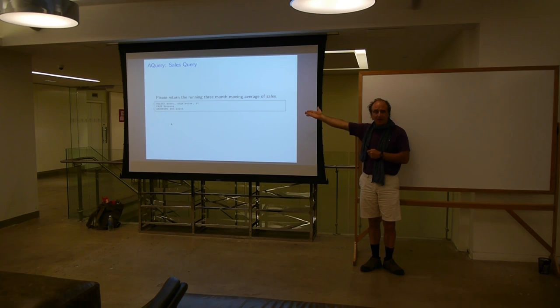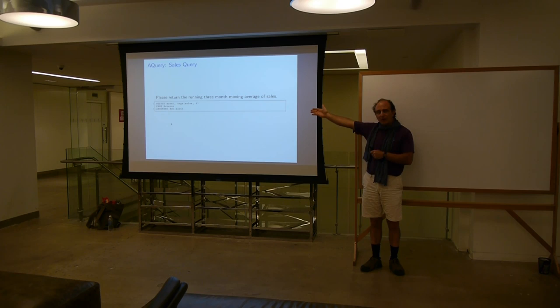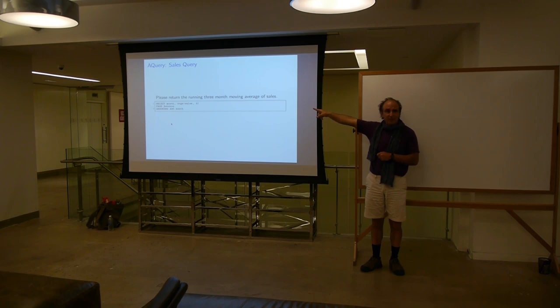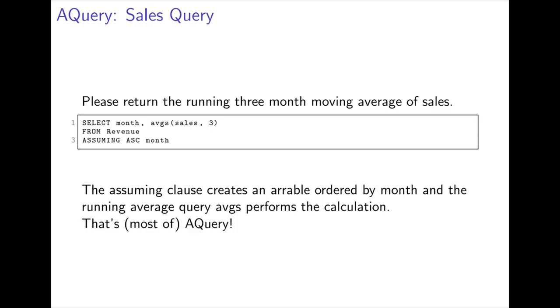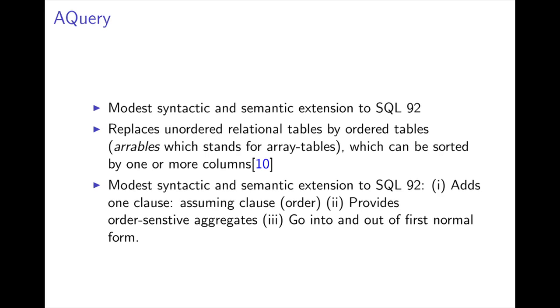Why is that an advantage? Well, it's an advantage because if this table is in fact not ordered by time and we do the moving average, of course we get nonsense. We really need it to be ordered by time. So from an SQL programmer's point of view, they have to understand this ASSUMING clause, which should not be so hard because they already understand the ORDER BY clause. So the only new things here are ASSUMING and averages with an S. This is most of a query — a modest syntactic and semantic extension to SQL 92.